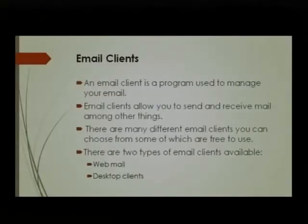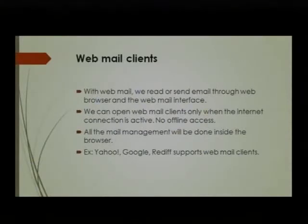The client always requests the server to get information, and here we are requesting emails from the email server. Gmail is one of the free servers available. There are two types of email clients: webmail and desktop mail. Webmail is something we can access through the web, while a desktop client is installed on our computer and used to access mails locally. With webmail, we read and send mails through a web browser. We can open webmail clients only when the internet connection is active — there is no offline access, and all mail management is done inside the browser. Examples include Yahoo, Google, and Rediff.